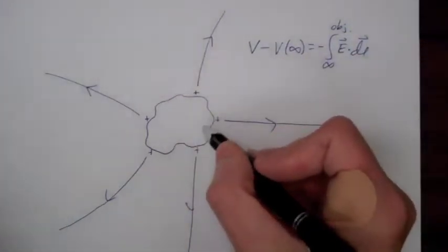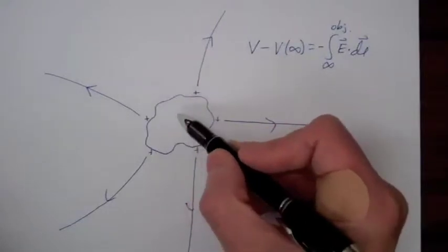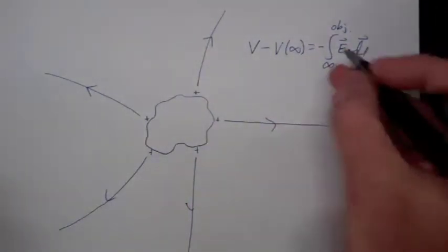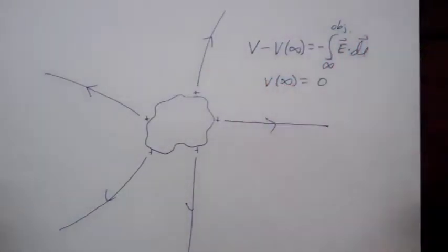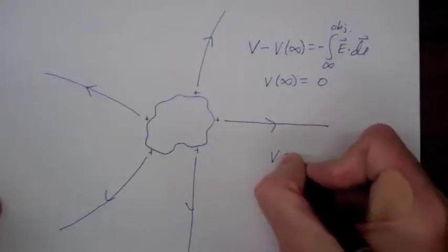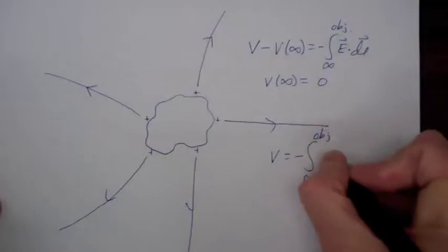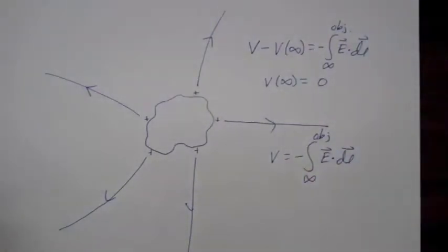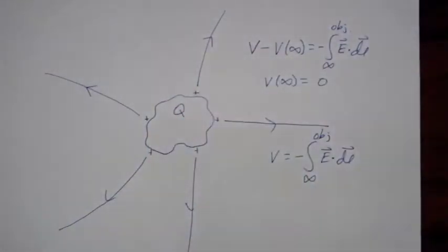Since there are no electric fields inside the object, the potential is the same everywhere on the object — it's an equipotential object. For reference, let's let the voltage at infinity be zero. So the potential of our object is minus the integral from infinity to the object of E dot dl. And let's assume the amount of charge we currently have on that object is plus q.